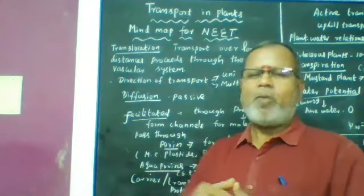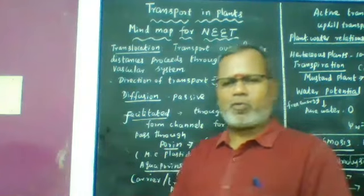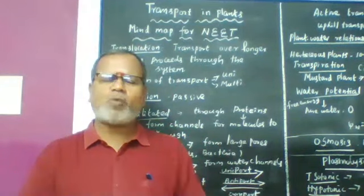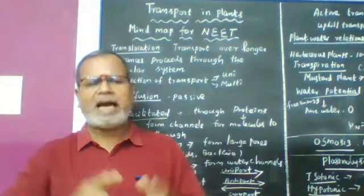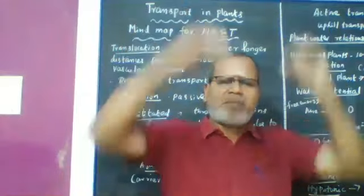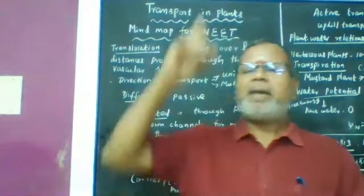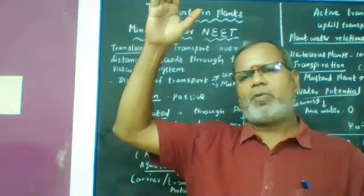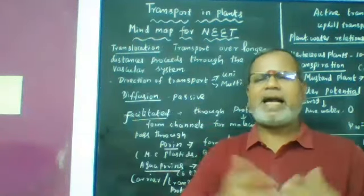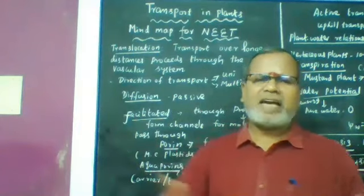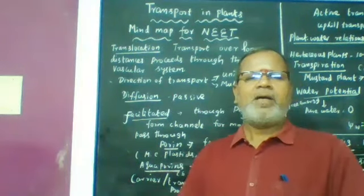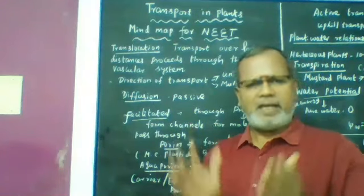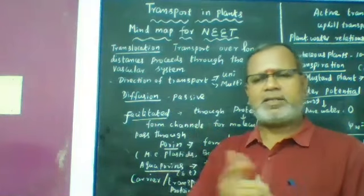Water and minerals transport is unidirectional — from root to aerial parts. Food material transport is bidirectional or multi-directional, moving from leaves to various parts. Both water/minerals and food materials are transported through the vascular system.